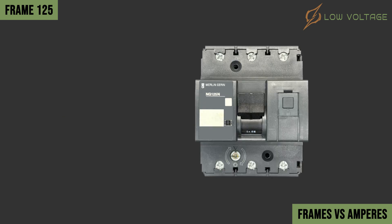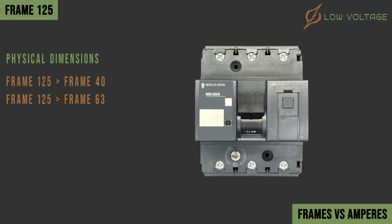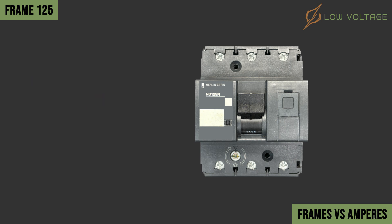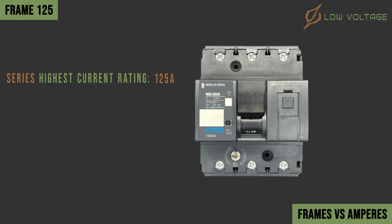The last frame in the MCB series is Frame 125. This frame has bigger physical dimensions than Frame 40 and Frame 63, because it can offer higher current ratings and characteristics. In this example, the series code is a designation for Frame 125, so the maximum series MCB rating is 125 amperes, and the current rating of this MCB is 25 amperes.